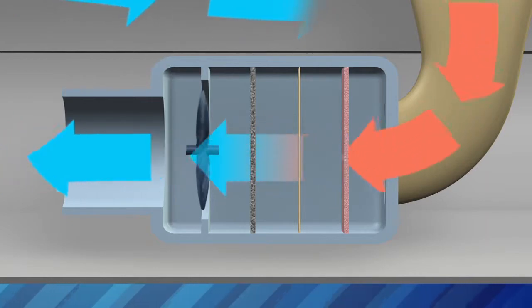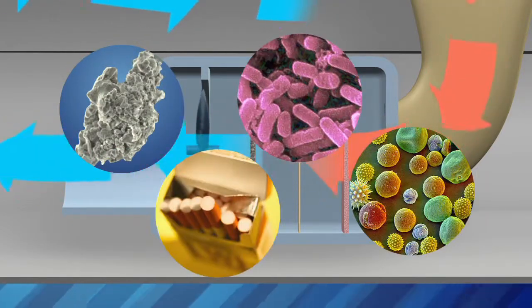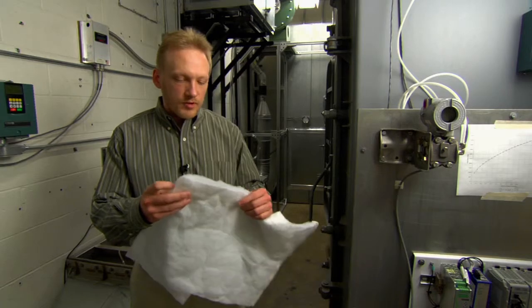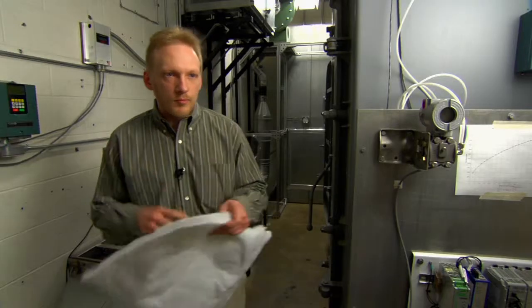The pre-filter and HEPA filter are mechanical filters. They trap particles like dust, pollen, germs, and tobacco smoke. This is made out of just a polyester felt. It's a fabric, a non-woven fabric. It's pretty lightweight, simple material.